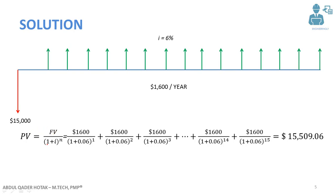As we have the formula PV equals future value divided by 1 plus I to the power of N, this will be done for year 1, year 2, year 3, and it will go on up to year 14 and year 15.